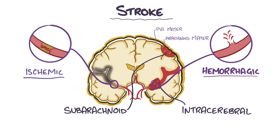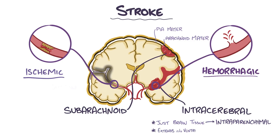An intracerebral hemorrhage that involves just the brain tissue is called an intraparenchymal hemorrhage, whereas if the blood extends into the ventricles of the brain, which store cerebrospinal fluid, it is called an intraventricular hemorrhage.